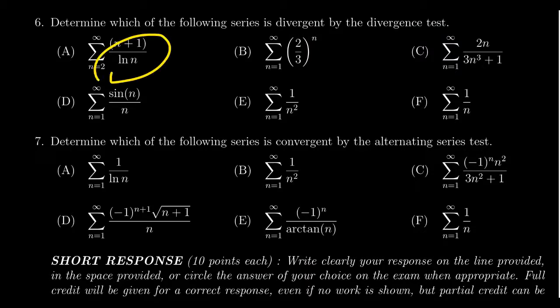You look at the first one, n plus 1 over the natural log of n. That kind of seems kind of hard. I'm going to go somewhere else. This is a geometric series right here where the ratio is two-thirds. That actually is going to be convergent, so that's not the answer.